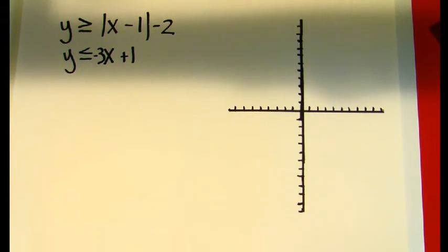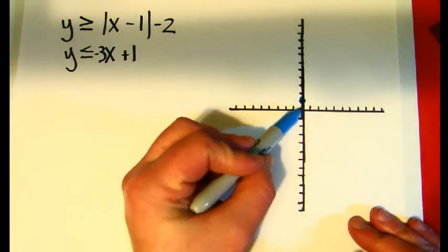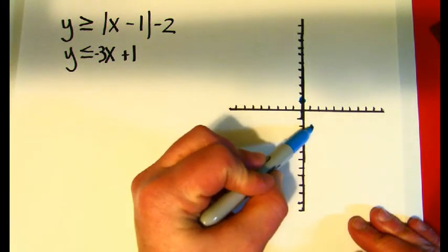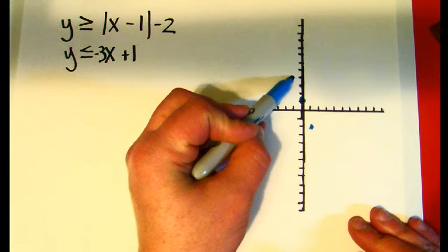So the negative 3x plus 1, I'm going to go up to 1, I'm going to make my first dot, then I'm going to go down 3 and right 1, and then on the other side of it, I'm going to go up 3 and left 1.